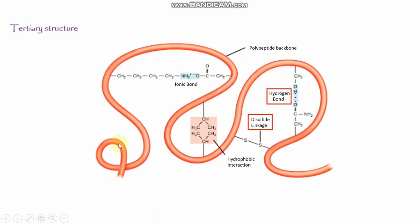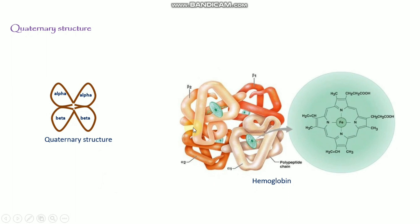This is the tertiary structure — the three-dimensional structure of the protein. Next is the most complex kind of structure, that is the quaternary structure. Many proteins are made up of a single polypeptide chain and have only tertiary structure. However, some proteins are made up of multiple polypeptide chains, also known as subunits — like the alpha subunit and the beta subunit. When these subunits come together, it forms the quaternary structure. An example is hemoglobin, which has four different structures with alpha chains and beta chains that join together to form the quaternary structure.